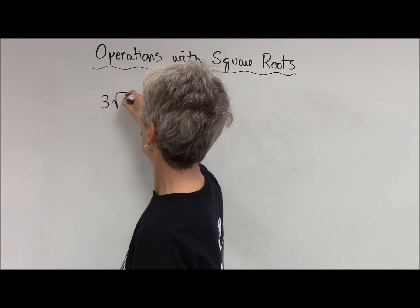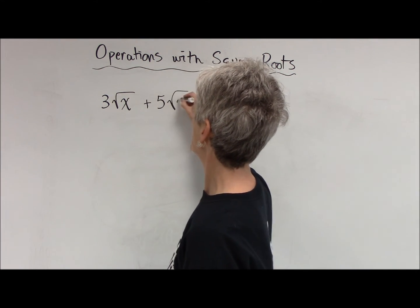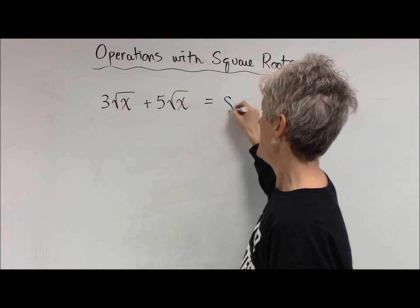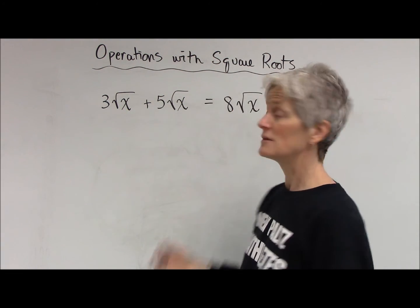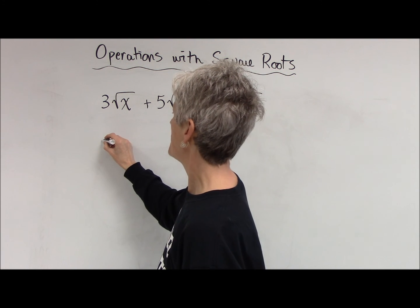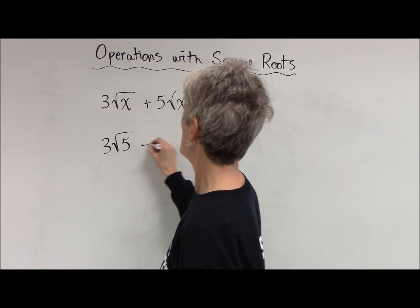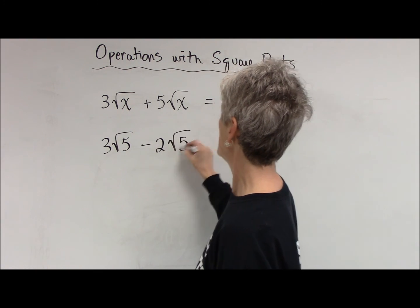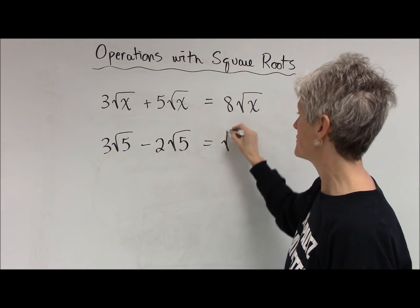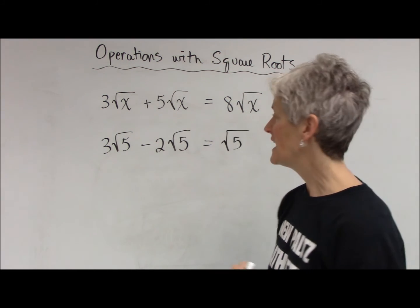If I have 3 times the square root of x plus 5 times the square root of x, those are like terms — that gives me 8 times the square root of x. Likewise, if I have 3 times the square root of 5 minus 2 times the square root of 5, those are like terms. That gives me 1 times the square root of 5. Combine like terms.